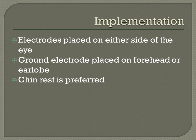In the implementation of this device, electrodes are placed on either side of the eye. The ground electrode is placed on either the forehead or the earlobe, and a chin rest is preferred to stabilize the head so no other electro-muscular signals can be picked up by the EOG.